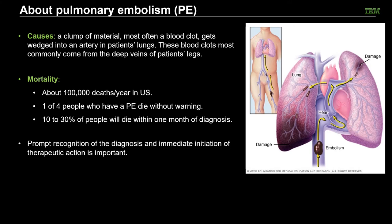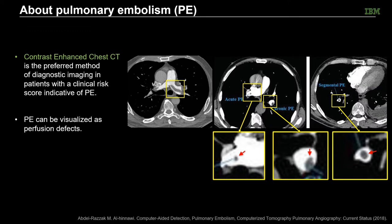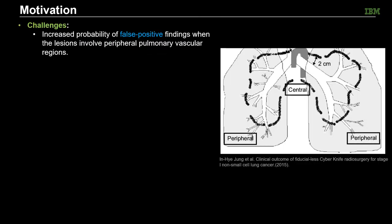Therefore, prompt diagnosis and immediate treatment is crucial. Contrast-enhanced chest CT is commonly used for PE diagnosis, where PE can be visualized as perfusion defects, as can be seen on the examples on the right. However, when the lesions involve peripheral pulmonary vascular regions, the sub-segmental PEs are really small, causing increased false positive findings.